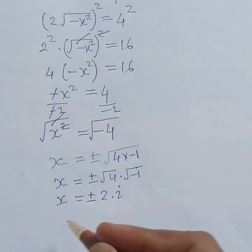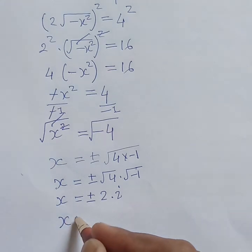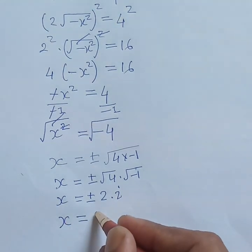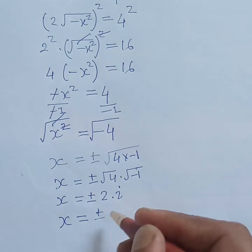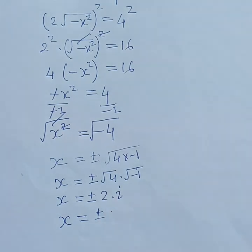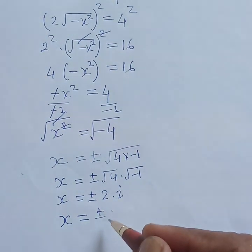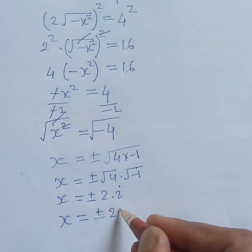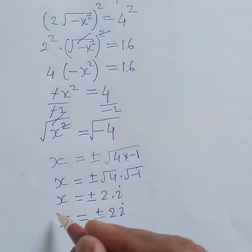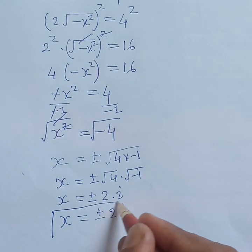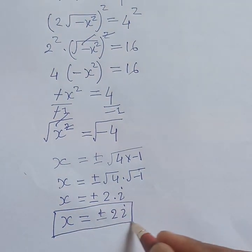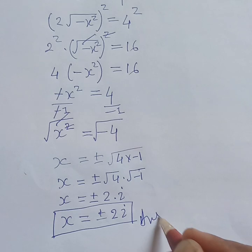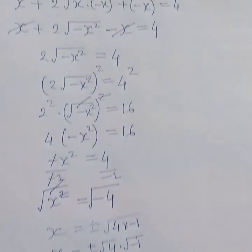Root over 4 is 2, and root over minus 1 is iota, that is i. Hence we get two values of x: x equals plus or minus 2i. This is the final answer of this equation. Thank you for watching this video.